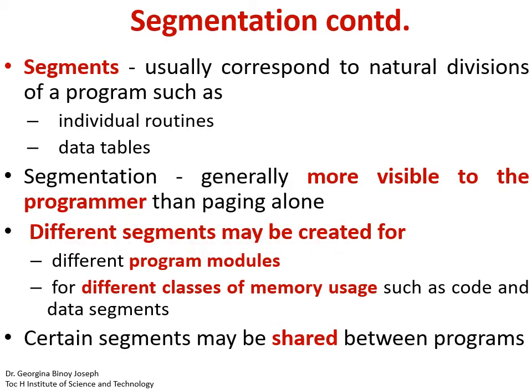Different segments may be created for different program modules — you can have different subroutines and program modules working together. The linker takes the object files of the various programs and joins them together to form the executable. Different segments may also be created for different classes of memory usage, such as the text segment where the code resides, and the data segments. Certain segments may even be shared between programs.